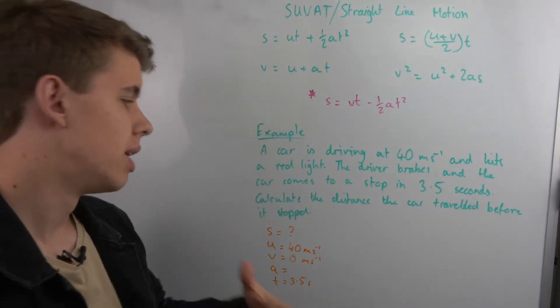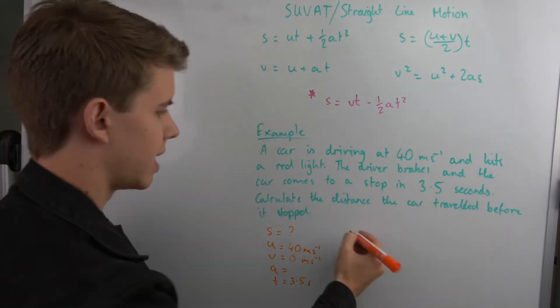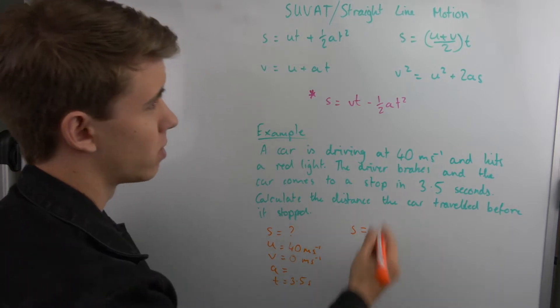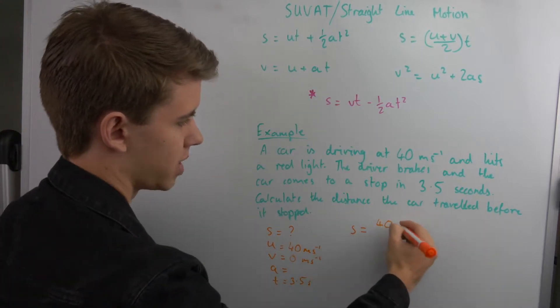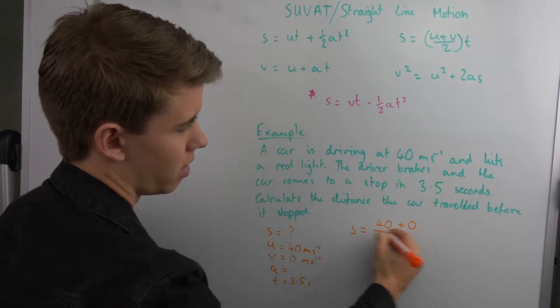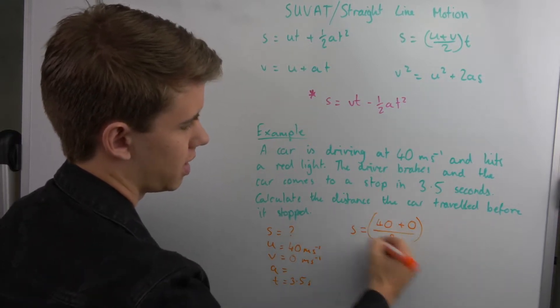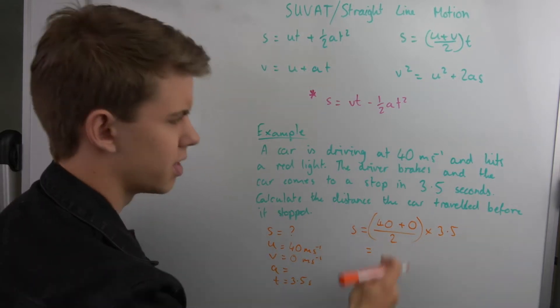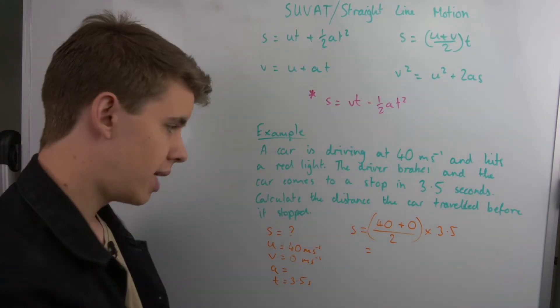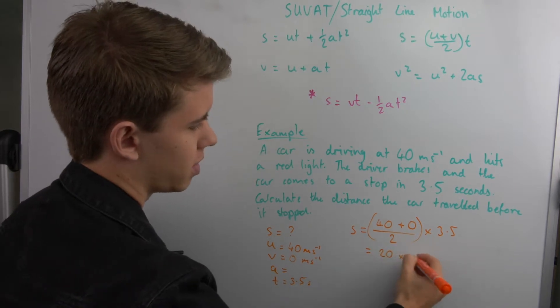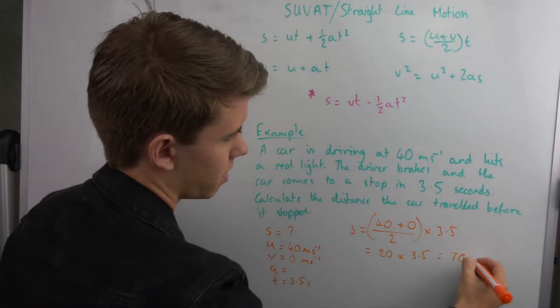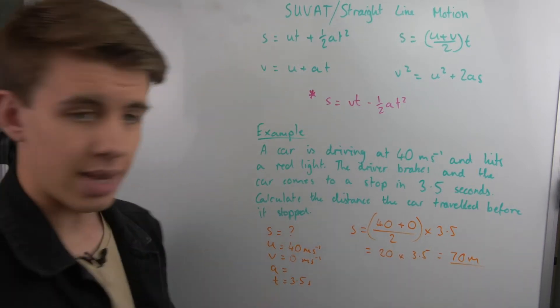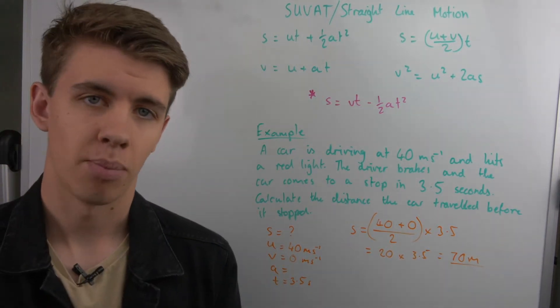So we say that our displacement is equal to our initial velocity, 40, plus our final velocity, zero, all divided by two, and then times by 3.5, which gives us 40 over two, which is 20, and 20 times 3.5 will be 70 meters. And that gives us our answer to that problem.